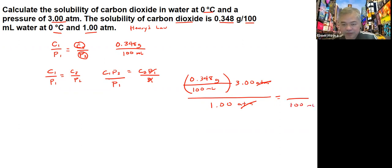So it's 0.348 divided by 100 times 3 over 1. If you do that calculation, you will get a value of around 1.044 grams.